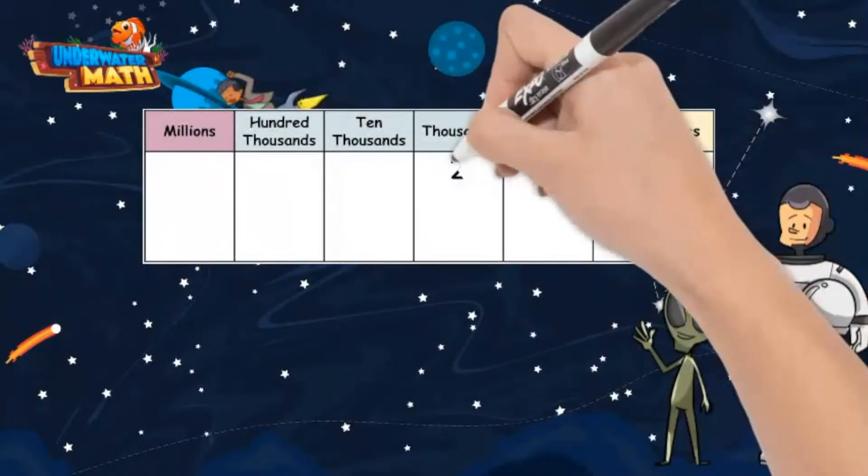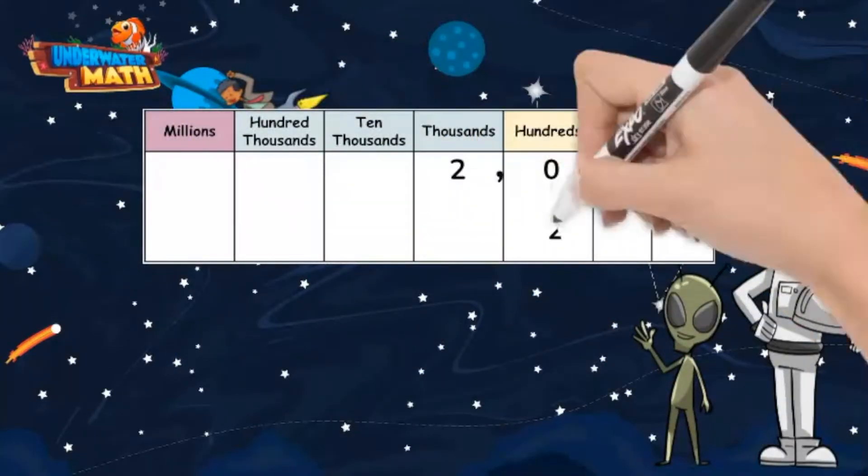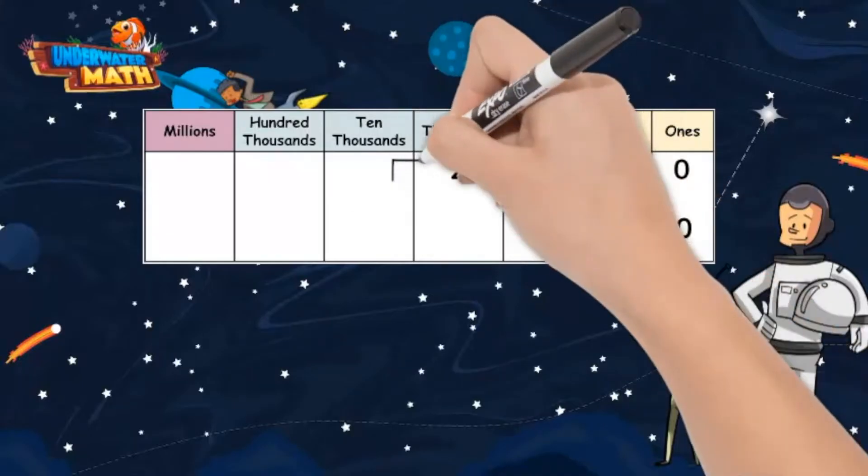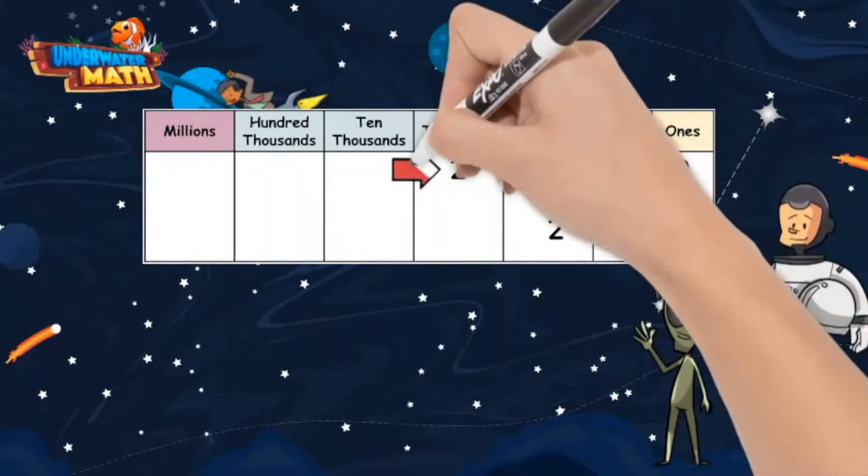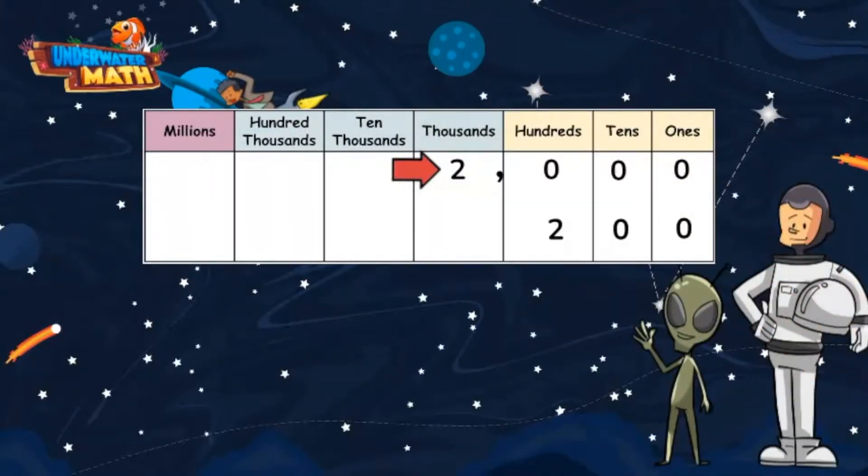Let's try this with numbers. I am writing the number 2000 and the number 200 on the place value chart. Do you notice the number 2000 has one extra place value than the number 200? This means the number 2000 is greater than the number 200.